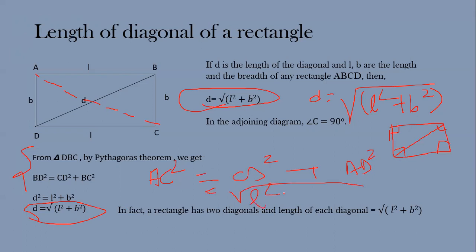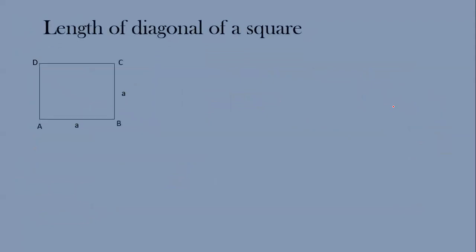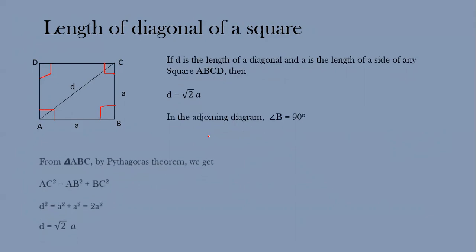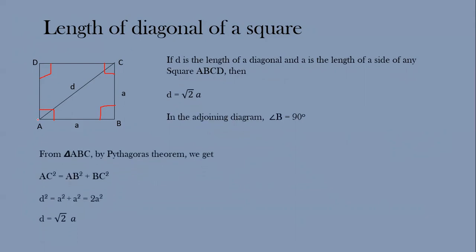Now we will find the length of the diagonal of a square. Suppose we have a square with side a. All angles of a square are 90 degrees. If we connect vertices A and C, that is the diagonal. Since it's a 90-degree angle, we can use Pythagoras's theorem: AC² = BC² + AB².